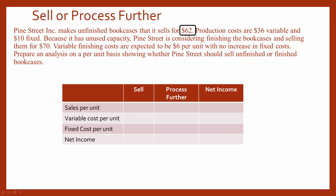The problem tells us that the sales price per unit is $62, and the production costs are $36 variable and $10 fixed. When we put that in our table, we can see that the net income per unit is $16. If Pine Street decides to finish the bookcases, they could sell those for $70, so our sales price per unit goes up to $70.